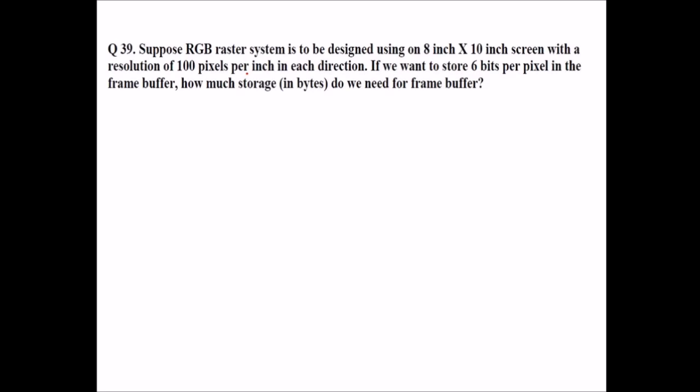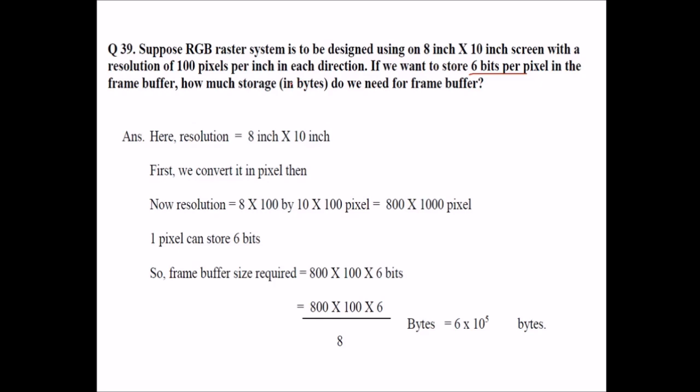Suppose RGB raster system is to be designed using 8 inch by 10 inch screen with a resolution of 100 pixels per inch in each direction. This is resolution and we need to convert it into the pixel. So what we do 8 into 100 by 10 into 100 because 100 pixels per inch are there. In terms of pixel, it will be 800 by 1000.